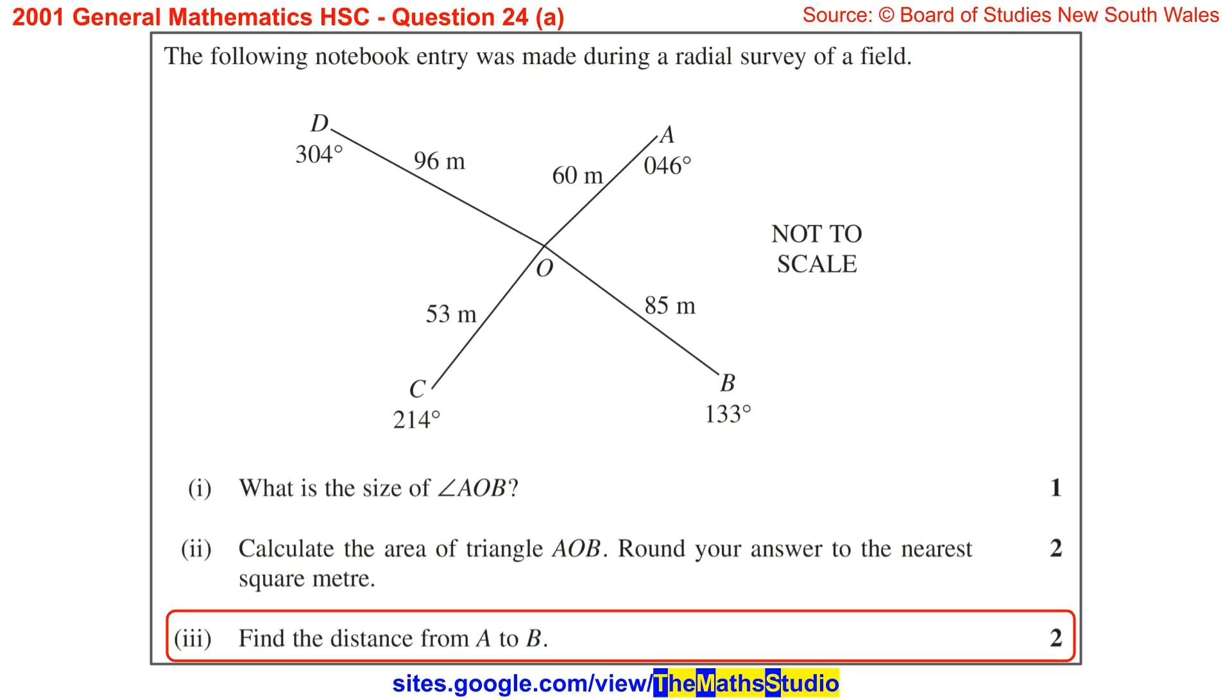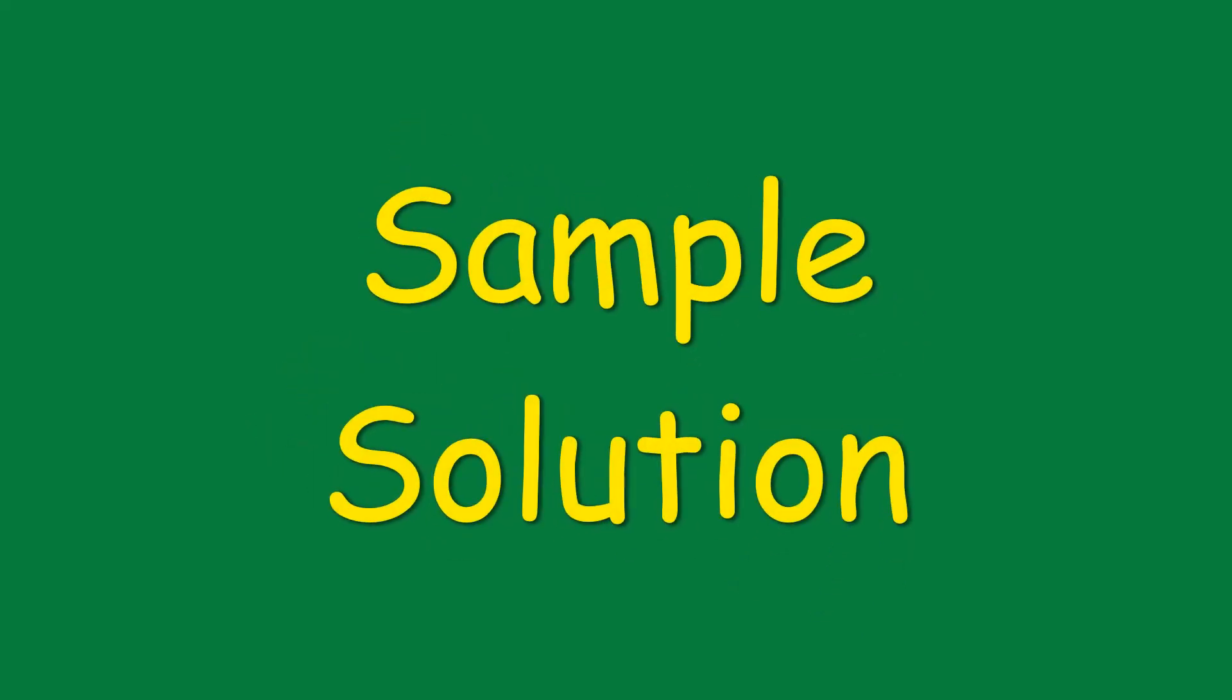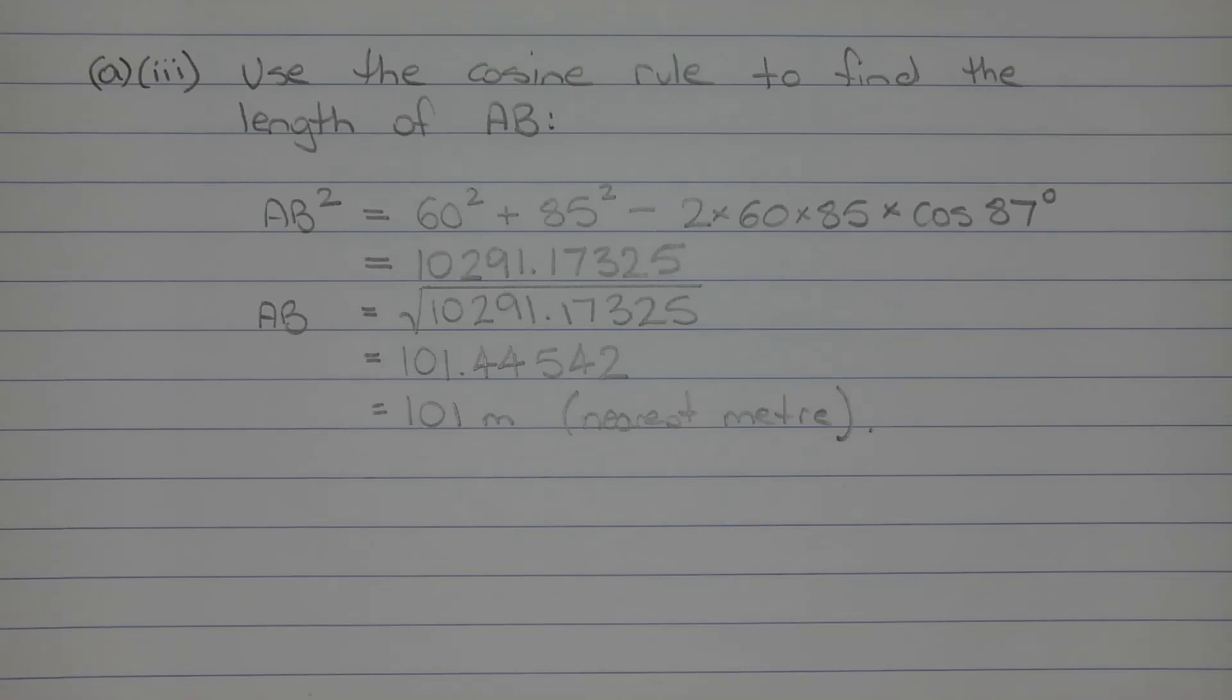Part 3: Find the distance from A to B. In triangle AOB, two sides and the included angle are known. Now, the distance from point A to point B is represented by the third side of triangle AOB. So we're going to use the cosine rule to find the length of AB.